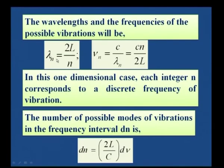If you have one loop, the entire length equals the length of one loop; with two loops, the length of two loops equals the length of the string. When n=1, the maximum wavelength λ = 2L; if n=2, the wavelength comes down and the frequency goes up. The frequencies are ν_n = c·n/(2L). Each integer n corresponds to a discrete frequency of vibration.